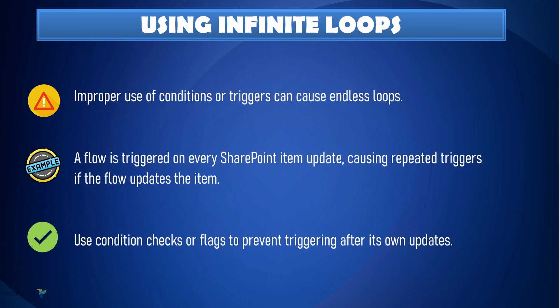Fifth: stop using infinite loops. Sometimes a flow can accidentally trigger itself and keep running in an endless loop. Let's say you have a flow that triggers when a SharePoint item is updated, and in the flow you update that same item — that update will trigger the flow again, leading to an infinite loop. To avoid this, use condition checks or flags that prevent the flow from re-triggering itself unnecessarily.